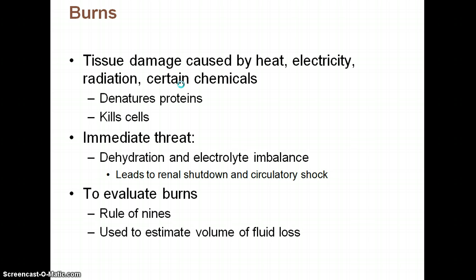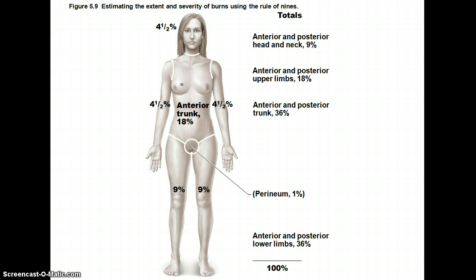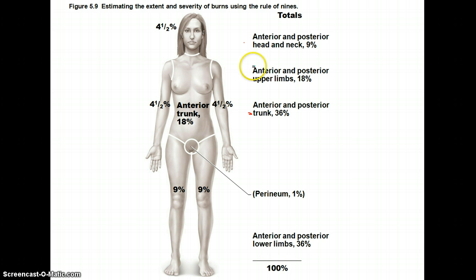To evaluate burns, doctors use the Rule of Nines to quickly estimate the volume of fluid lost. Totals for certain body areas are multiples of nine: the head (front and back) is 9%, the anterior trunk is 18%, the back is 18%, each upper limb totals 9%, the front of each leg is 9% and the back of each leg is 9%, and the perineum is 1%.